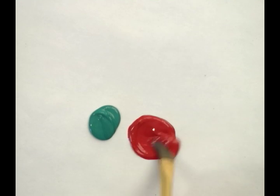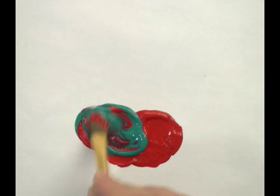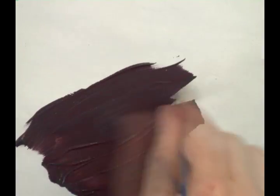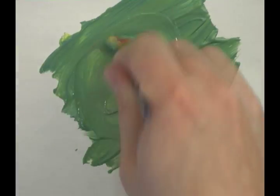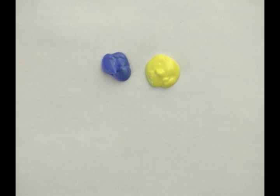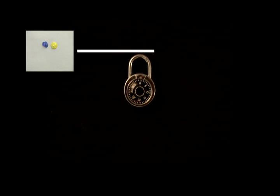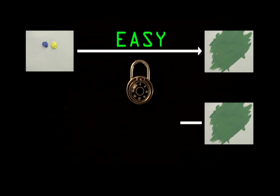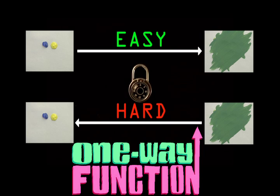One, it's easy to mix two colors together to make a third color. And two, given a mixed color, it's hard to reverse it in order to find the exact original colors. This is the basis for a lock. Easy in one direction, hard in the reverse direction. This is known as a one-way function.